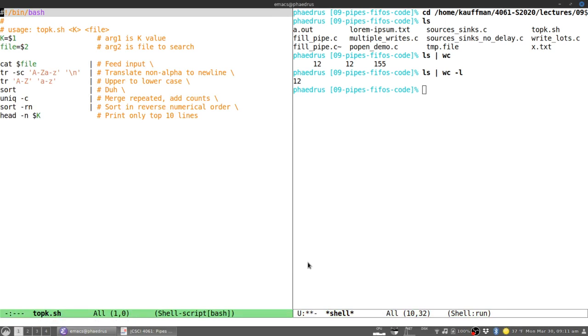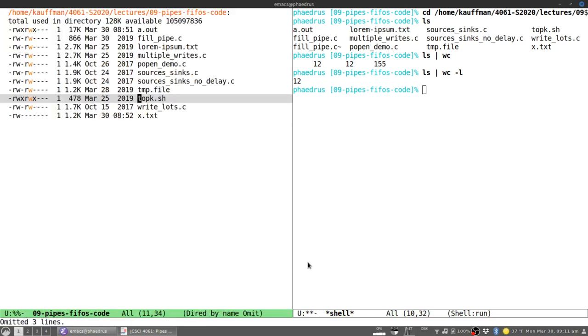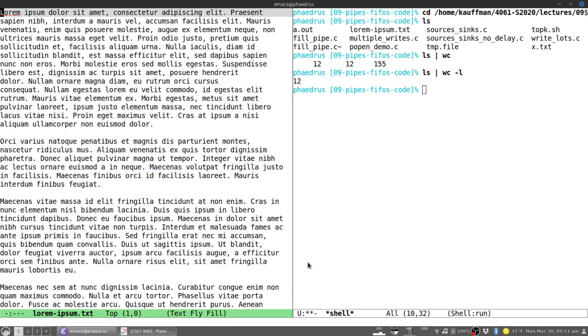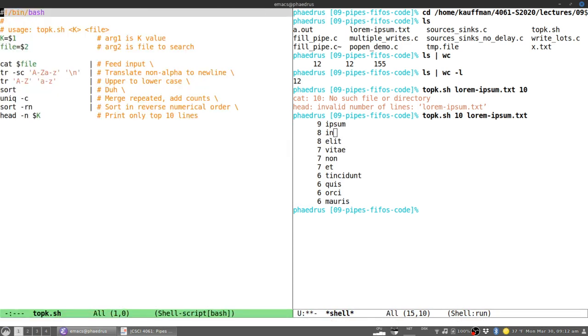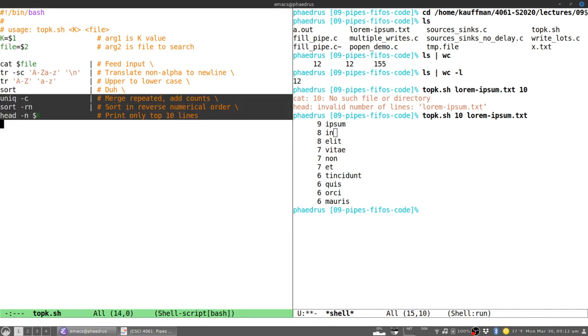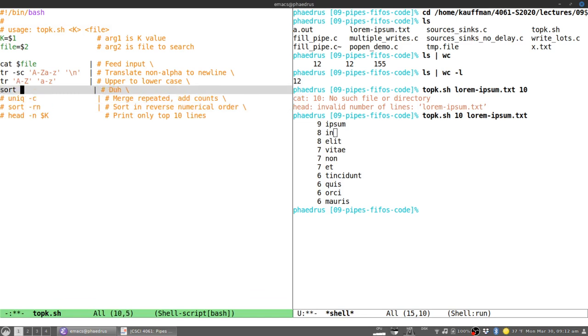The TR utility transforms all uppercase letters to lowercase for uniform case. Sort utility sorts output into alphabetic order. Unique with dash C merges adjacent entries, so if 'the' appeared six times, it would merge into a single occurrence with the count. Sort again in reverse numerical order causes the most frequent words to percolate to the top. Finally, head prints the first few lines of output.